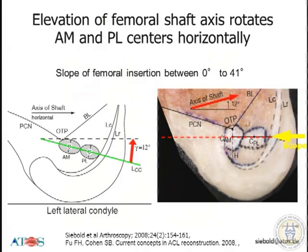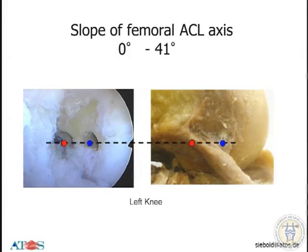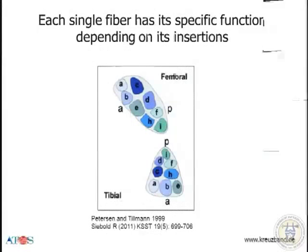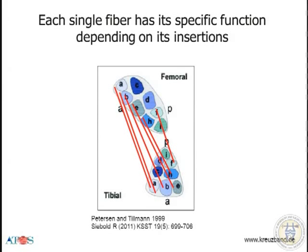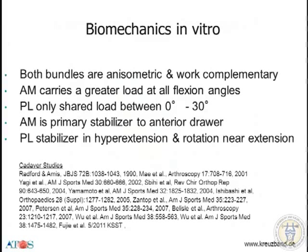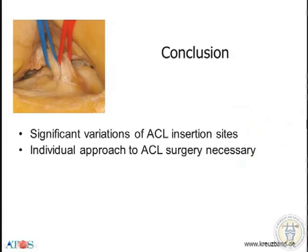There was discussion about the slope of the femoral insertions, and this is a very wide range — between 0 degrees and 41 degrees — so I think it's not ideal to use as a general orientation model. You can, of course, when you flex the knee, get both insertions, AM and PL, to a horizontal alignment, but who knows which angle applies to which patient, so it's difficult. From a biomechanics perspective, each fiber of the ACL has a function, so from my point of view we should try to reconstruct as many fibers as we can. In conclusion, there are significant variations of the ACL insertion sites and we should definitely have an individual approach to ACL surgery.